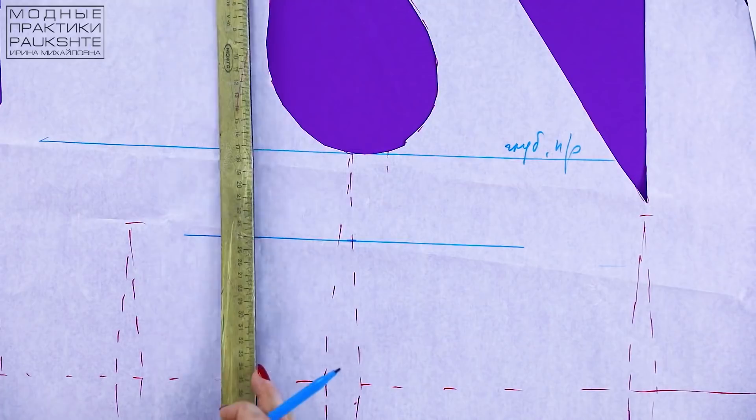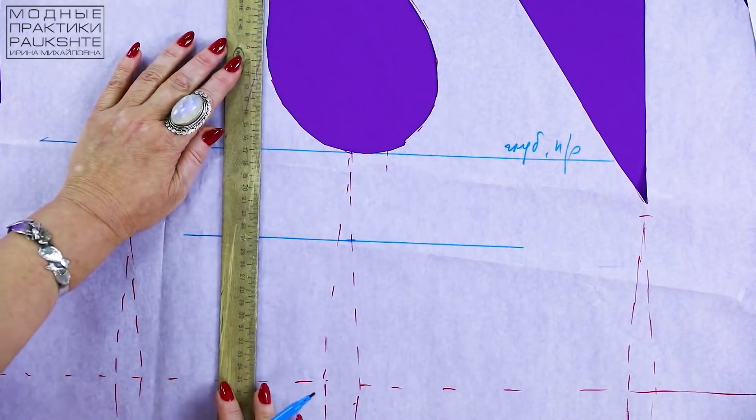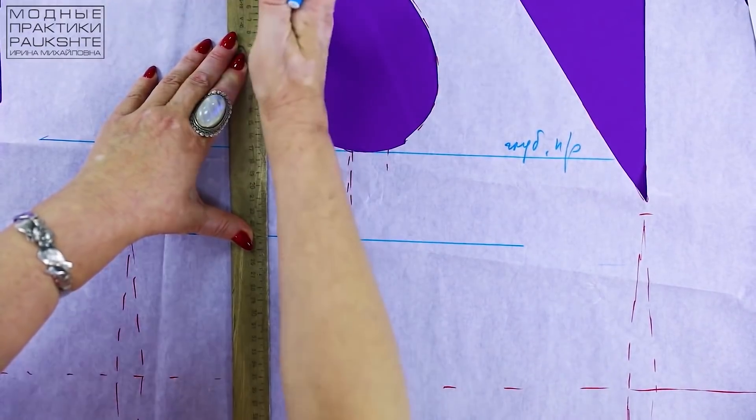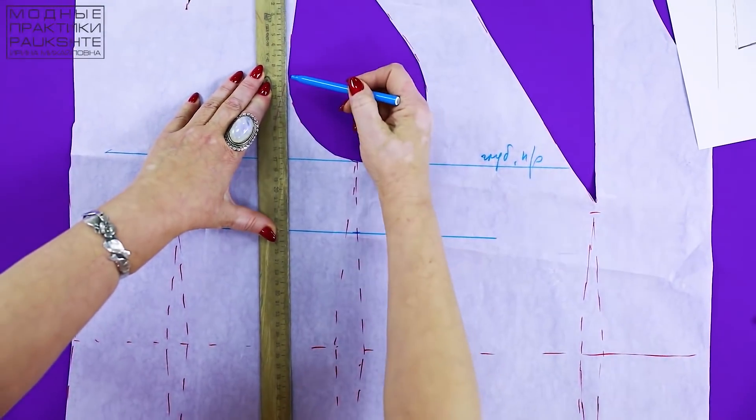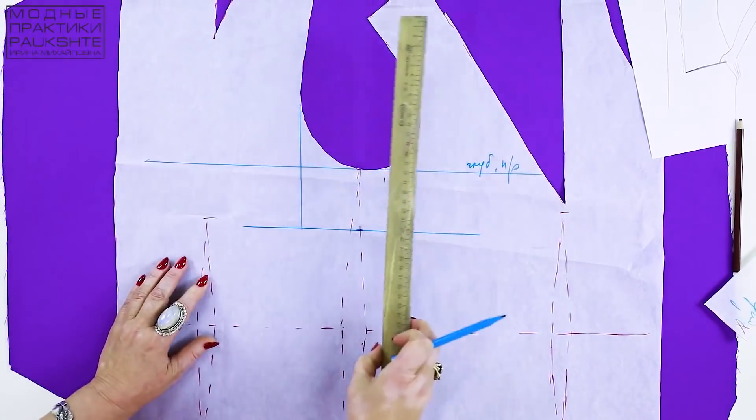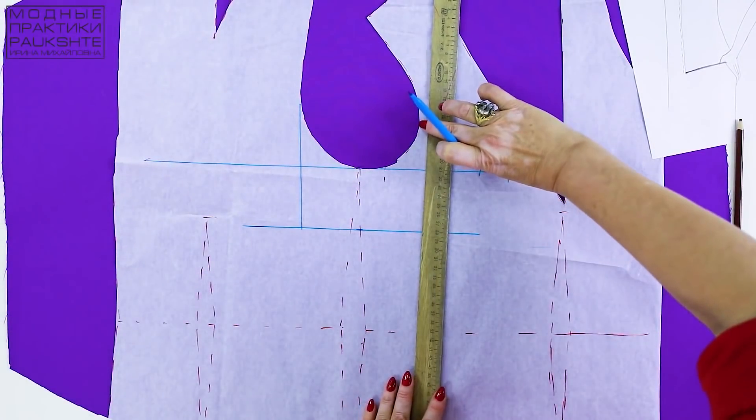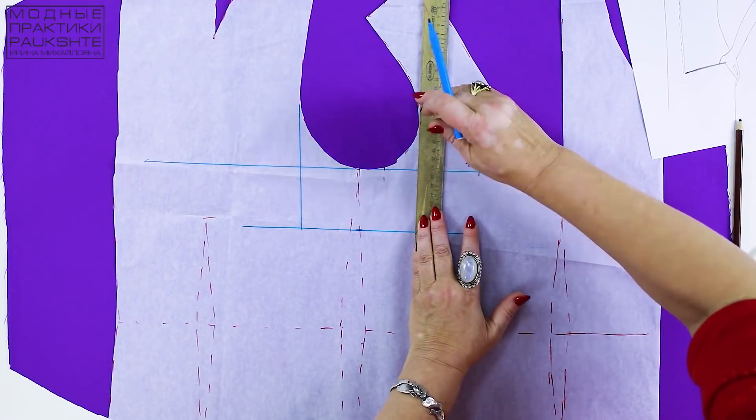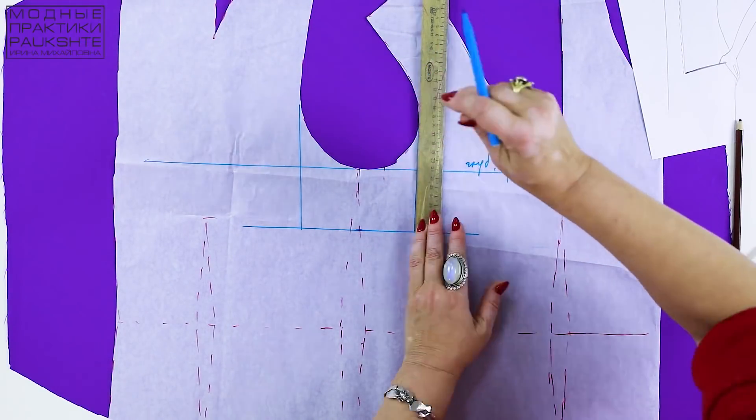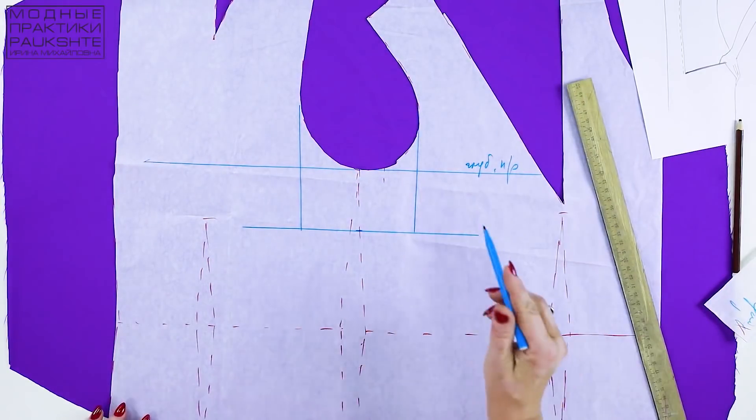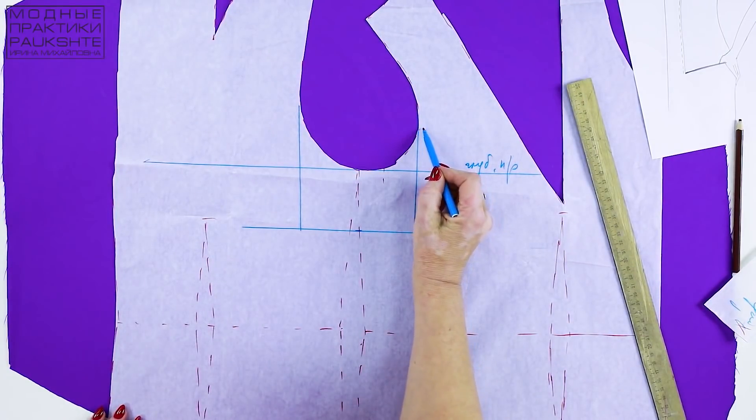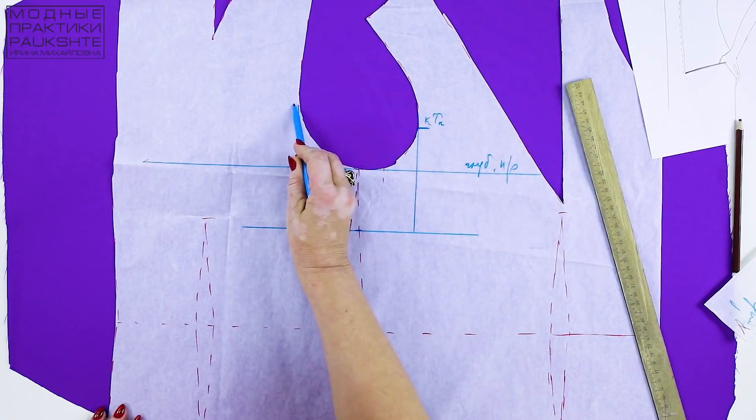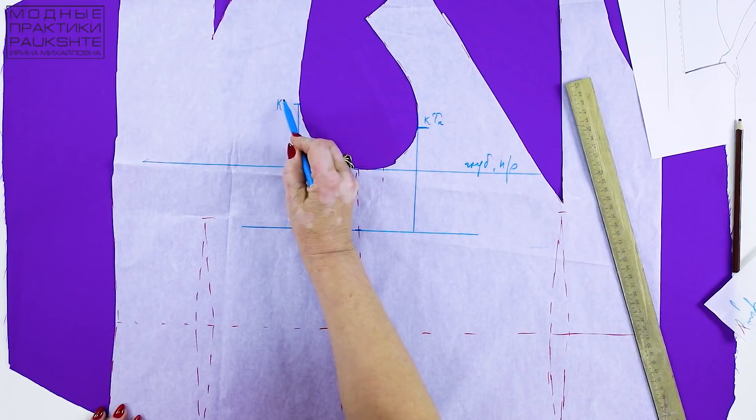Next, find the widest part of the armhole and draw a line down from it. Do it both on the front and the back sides. Draw the second line the same way. Find the widest part and draw a line down from it. I put two marks here. Checkpoint front. Checkpoint back.